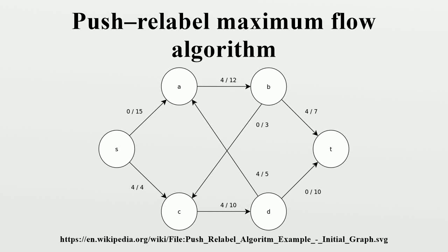In mathematical optimization, the Push-Relabel algorithm is an algorithm for computing maximum flows. The name 'Push-Relabel' comes from the two basic operations used in the algorithm. Throughout its execution, the algorithm maintains a pre-flow and gradually converts it into a maximum flow by moving flow locally between neighboring vertices using Push operations, under the guidance of an admissible network maintained by Relabel operations. In comparison, the Ford-Fulkerson algorithm performs global augmentations that send flow following paths from the source all the way to the sink.